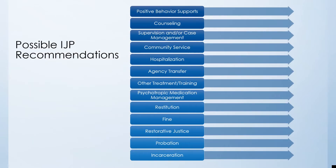Once you have conducted the assessment and identified areas of strength and need, the IJP team will develop recommendations. Some potential areas to consider are positive behavioral supports, counseling, supervision and/or case management, community service, hospitalization, agency transfer, treatment or training, medication management or involvement of a psychiatrist to look at psychotropic medication, restitution, fines, restorative justice, probation, or incarceration.